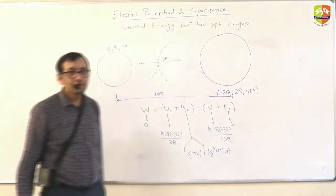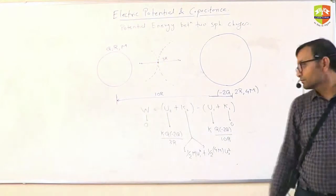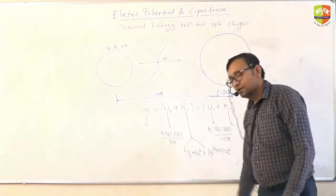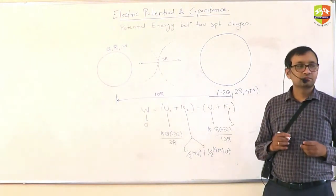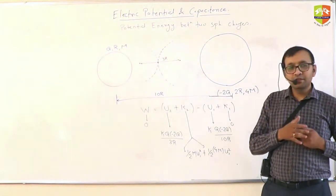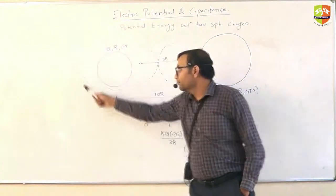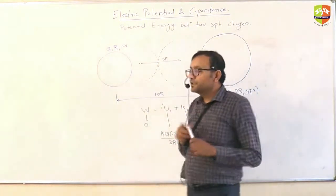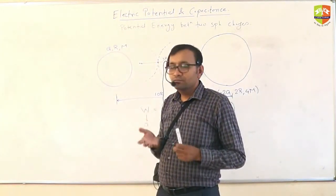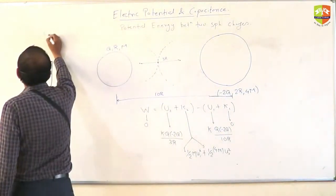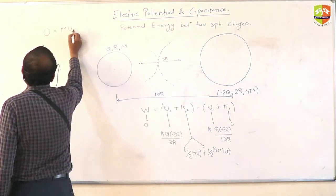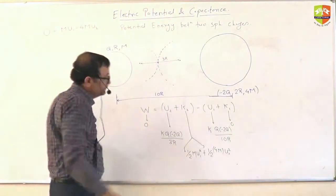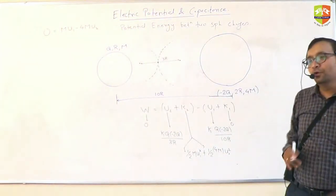How many variables do you see here? Two variables. You need another equation — linear momentum. I can conserve linear momentum because if I consider them a system, both of them, there is no external force; the force is internal among themselves. So initial momentum is zero. Therefore zero equals M·U1 minus 4M·U2. The directions of velocities are opposite. Solving these two equations, you can get the values of U1 and U2.